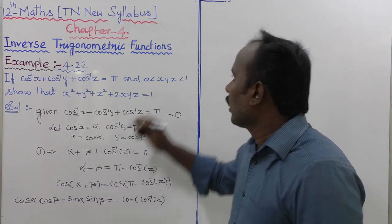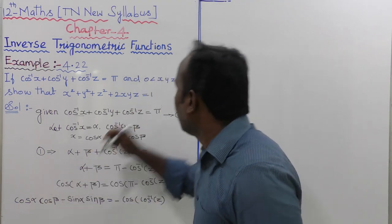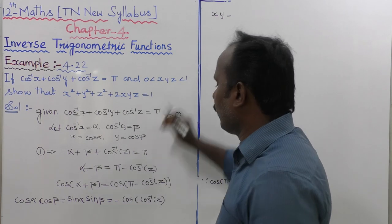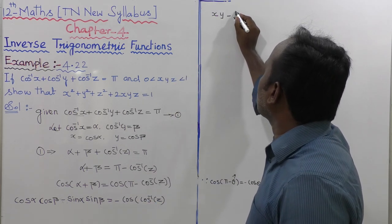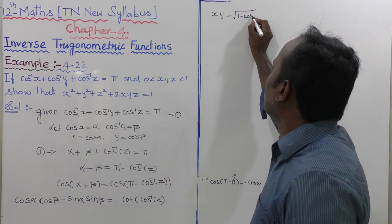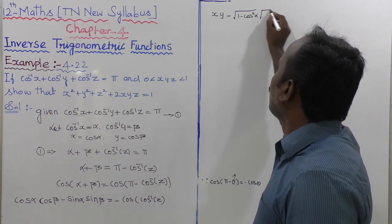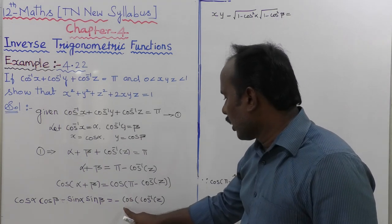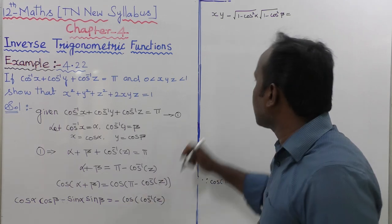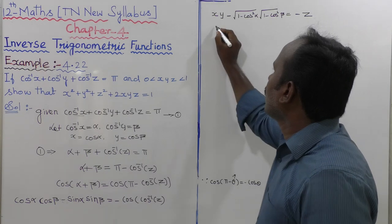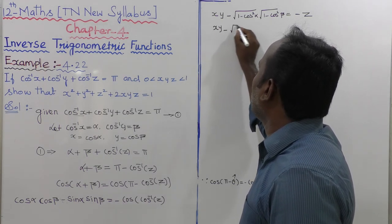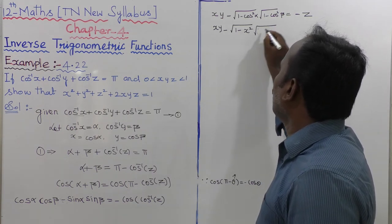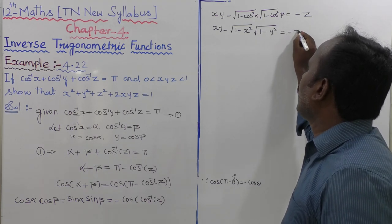Changing variables: cos α = x, cos β = y. So the equation becomes xy − √(1 − x²) · √(1 − y²) = −z, since cos(cos⁻¹(z)) = z.